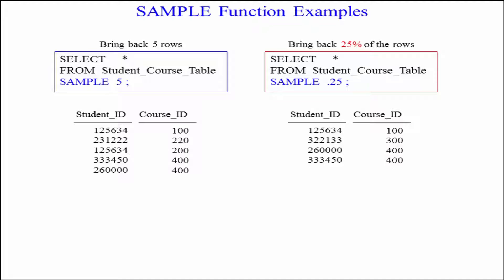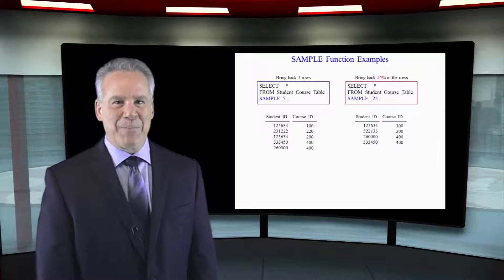Now I've got another version of this. Select everything from student course table sample point twenty five. Twenty five percent of the rows are coming back.